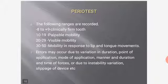The following ranges are recorded: 8–9 clinically firm tooth; 10–19 palpable mobility; 20–29 visible mobility; 30–50 mobility in response to lip and tongue movements. Errors may occur due to variation in duration, point of application, mode of application, and time of forces, or due to instability, variation, and slippage of the device.